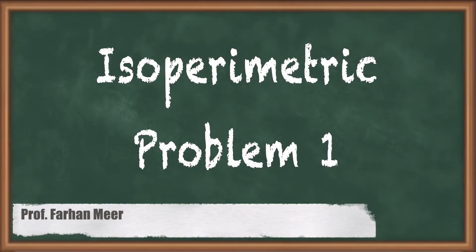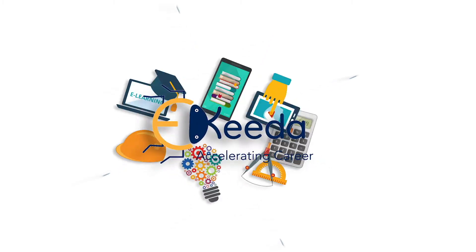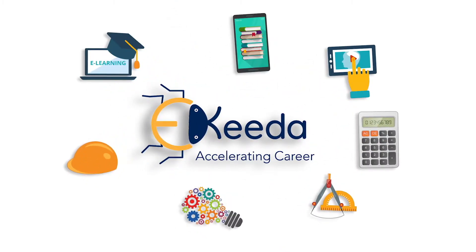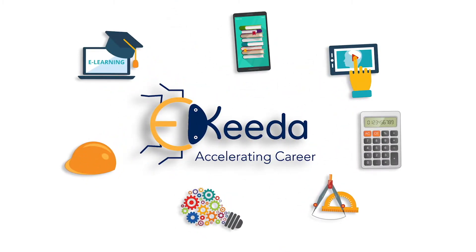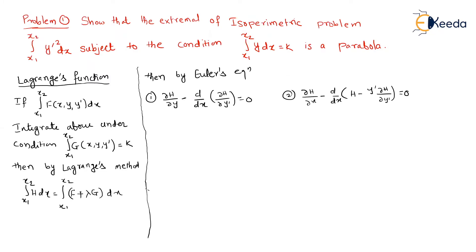Hello friends. In this video we will be discussing Type 4 isoperimetric problems, Problem Number 1. Welcome back friends. Let us start with the first problem of the isoperimetric problem type, also called Lagrange's function. This is what we have already discussed, so I have just written it here for your reference.